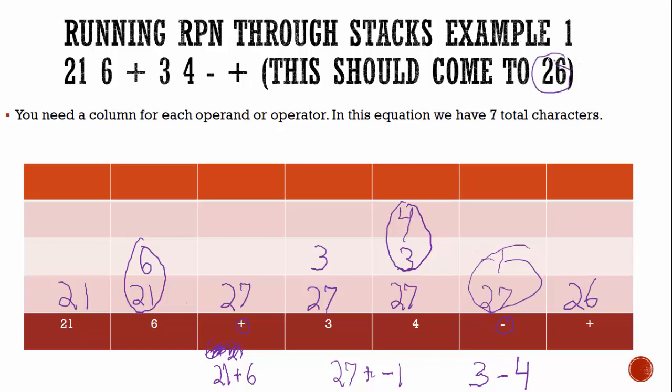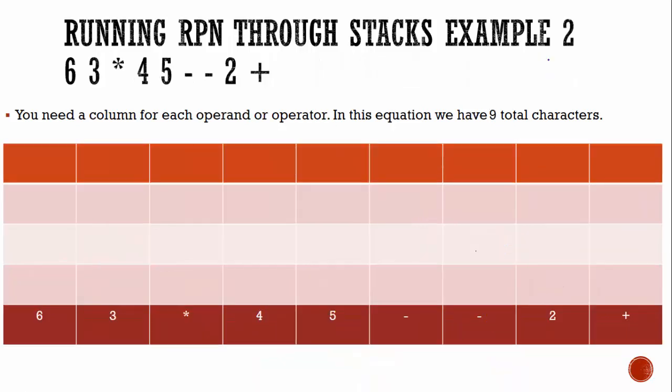Now that you know how it works, I strongly suggest on example two, 6, 3, asterisk, which is multiply 4, 5, minus, minus 2, plus, you can pause the video here and give this one a try. Okay, so you had a chance to try it. Let's work through this.